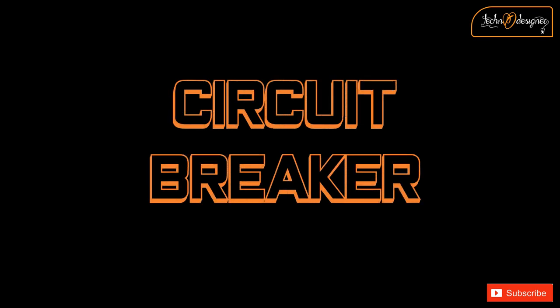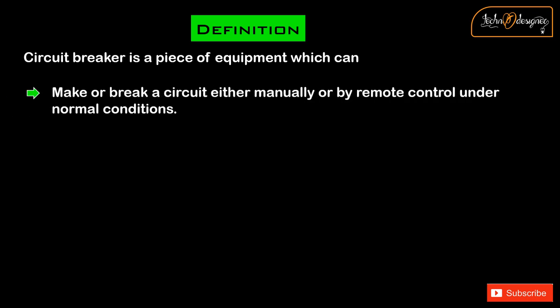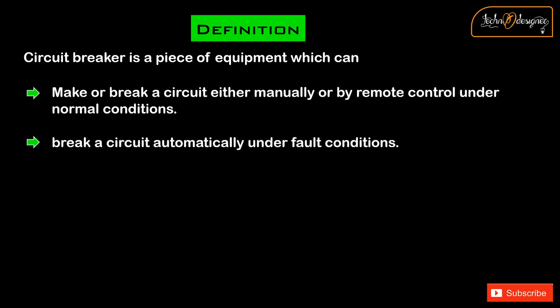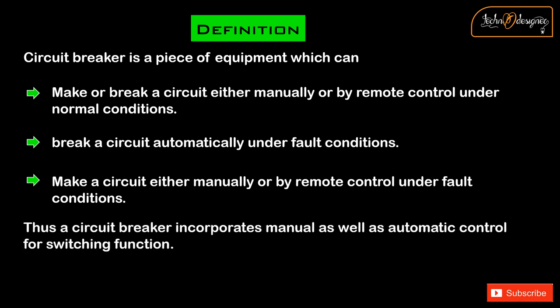A circuit breaker is a piece of equipment which can make or break a circuit either manually or by remote control under normal conditions, break a circuit automatically under fault conditions, and make or break a circuit either manually or by remote control under fault conditions. Thus a circuit breaker incorporates manual as well as automatic control for switching function.